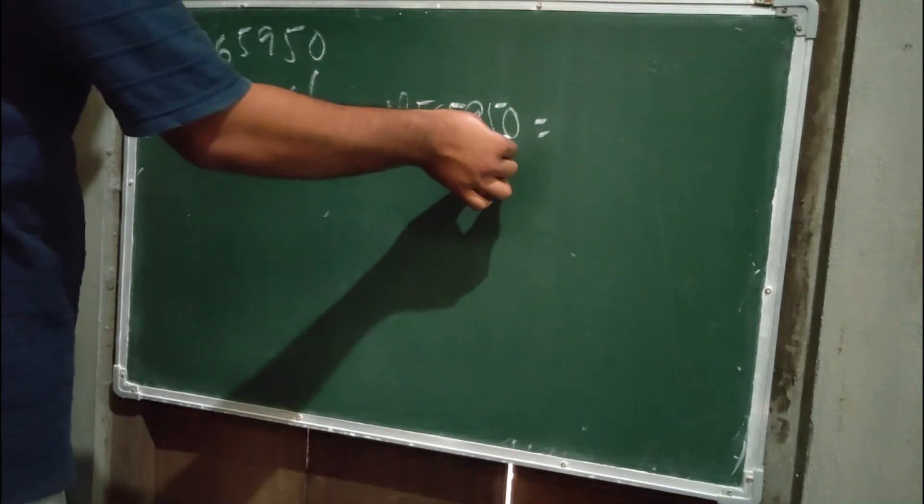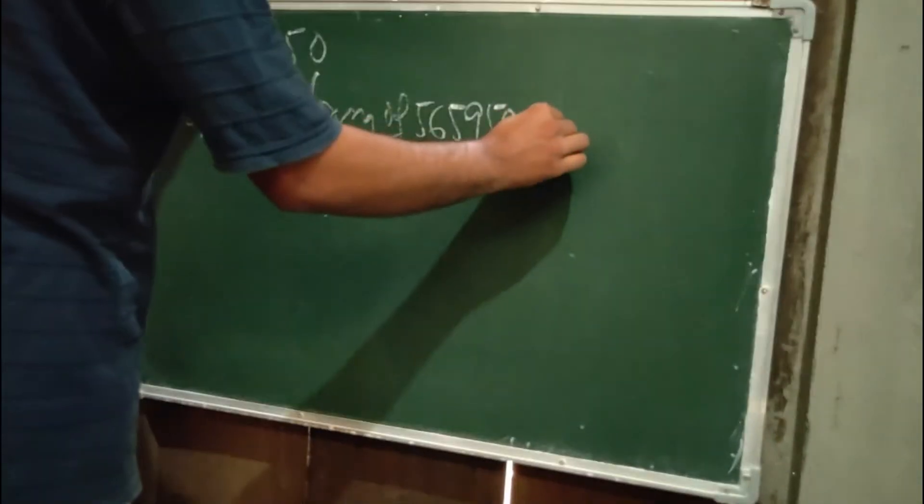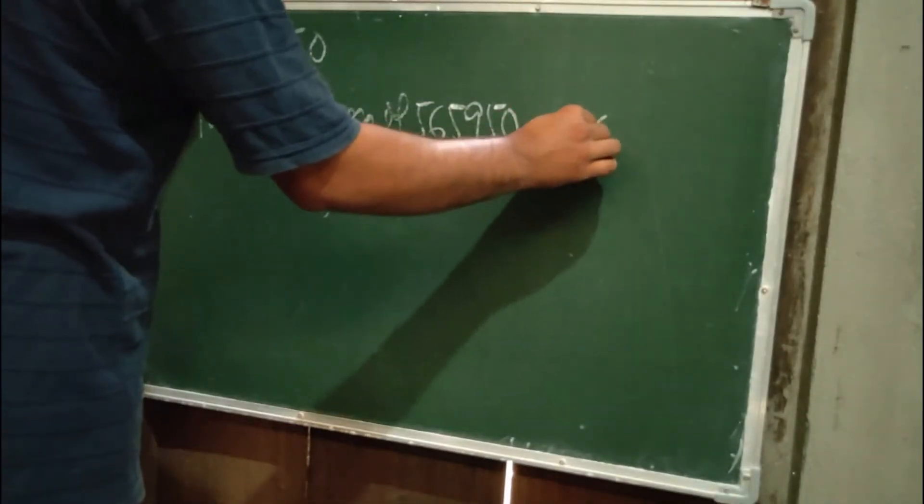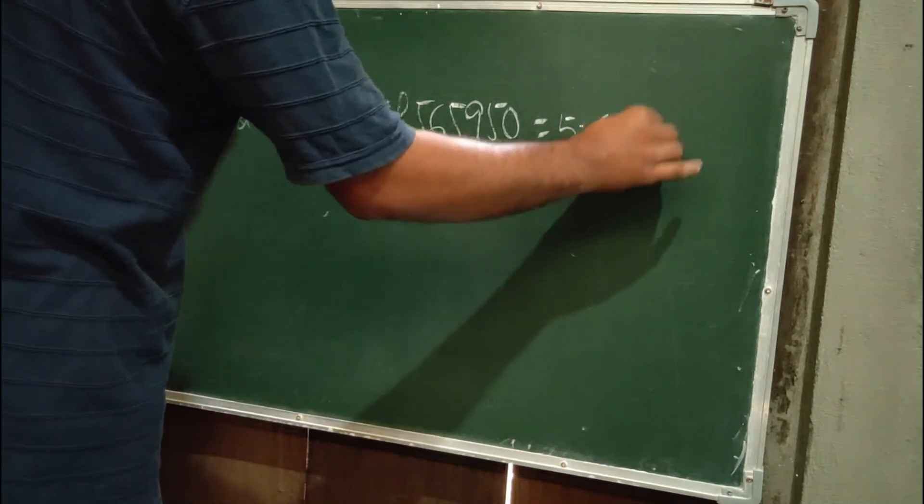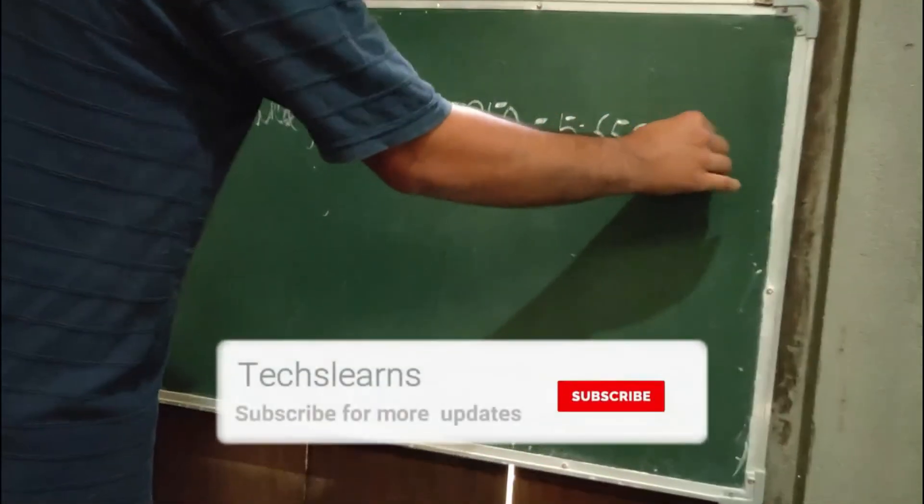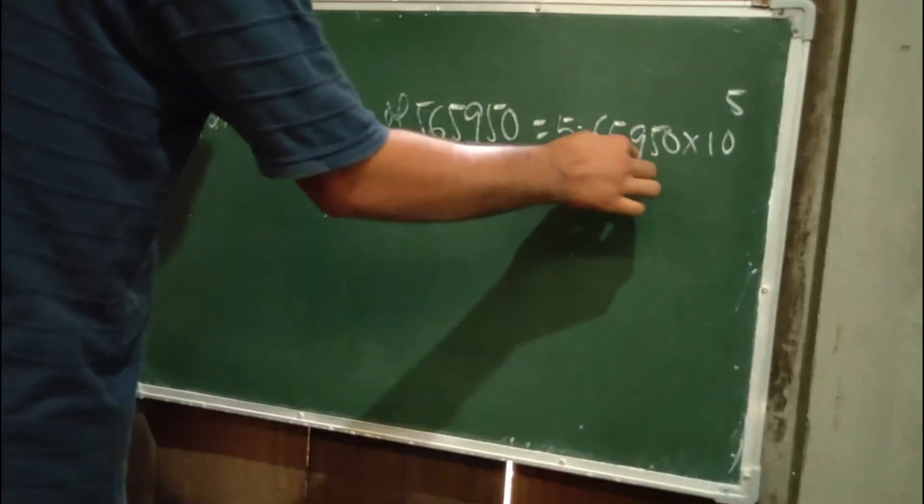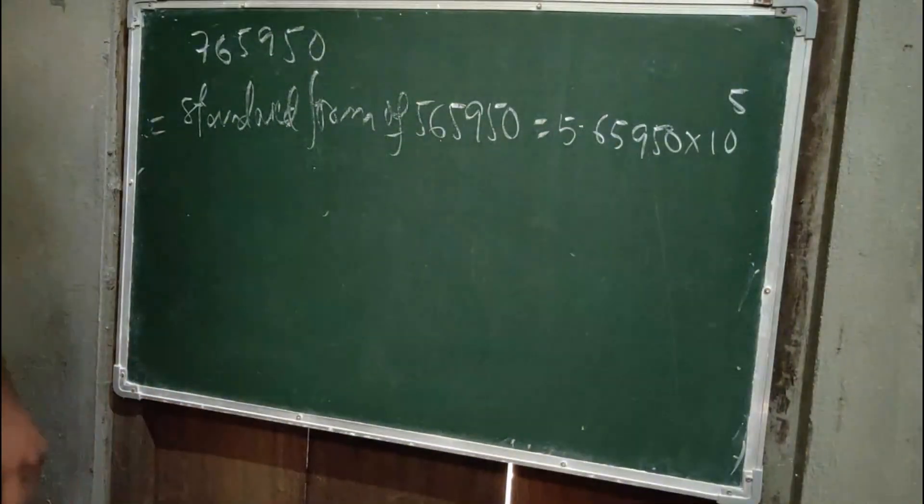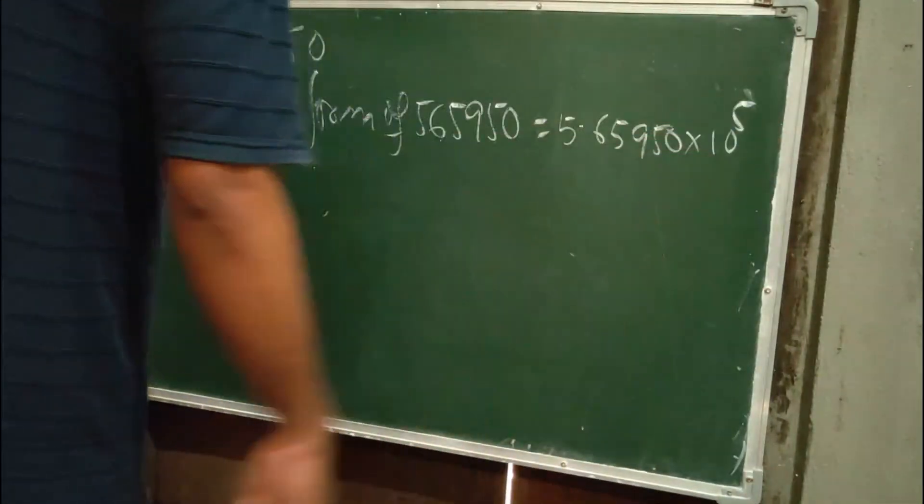We'll put the point 5 digits from the left, so 7.65950 × 10 to the power 5. 1, 2, 3, 4, 5. Is it clear?